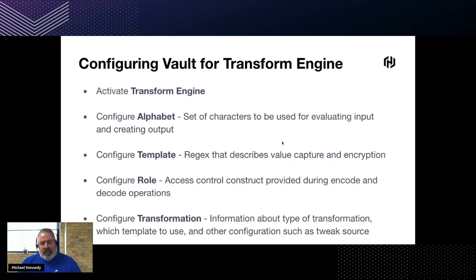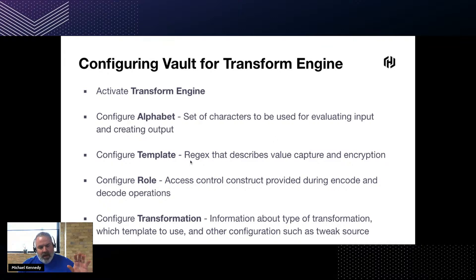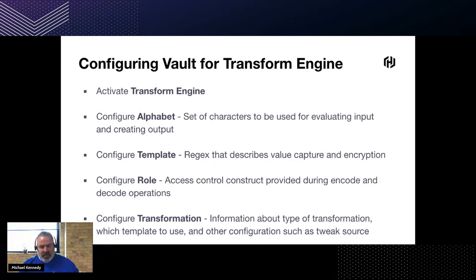To configure Vault for the Transform engine, the first thing we do is activate the Transform engine. Then we configure an alphabet, which is a set of characters used for evaluating input and creating output. We configure a template, which in our instance is a regex that describes the value capture and encryption. We configure a role, which is an access control construct provided during encode and decode operations. Then we configure the transformation itself, which includes the type of transformation, which template to use, and other configurations such as a tweak source.